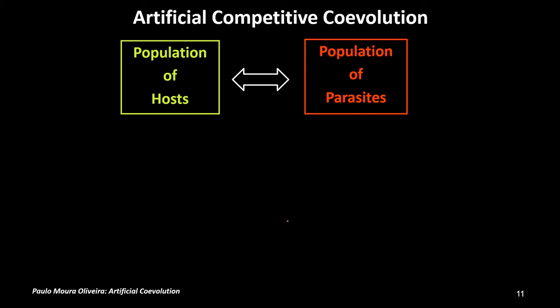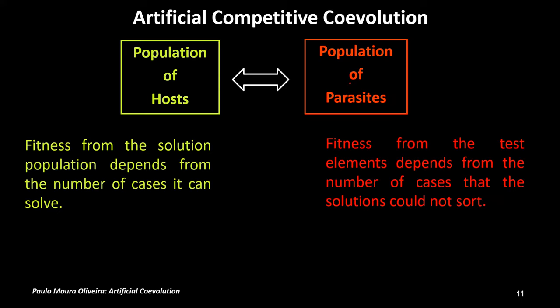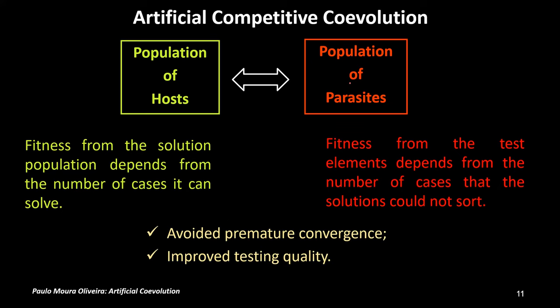He used a population of hosts representing the solutions to the problem, and a population of parasites representing the test cases for the solutions — the networks. The fitness of the solution population depends on the number of cases it can solve from the population of parasites, and the fitness of the test elements depends on the number of cases that the solutions could not sort. From this interaction between the host and parasite populations, it avoided premature convergence, which was a frequent problem in genetic algorithms, and also improved the testing quality and the solutions obtained.